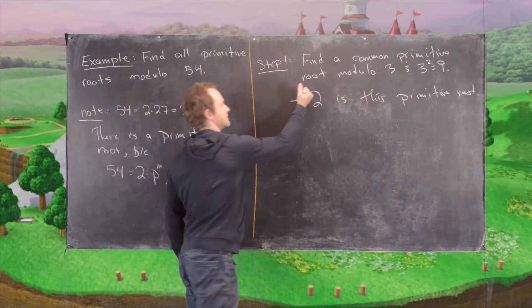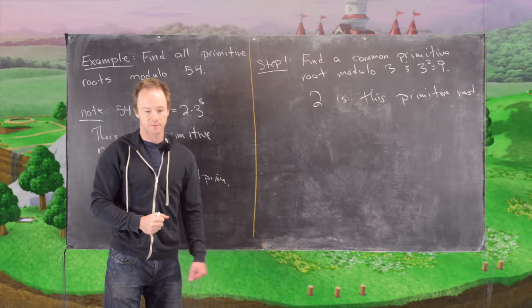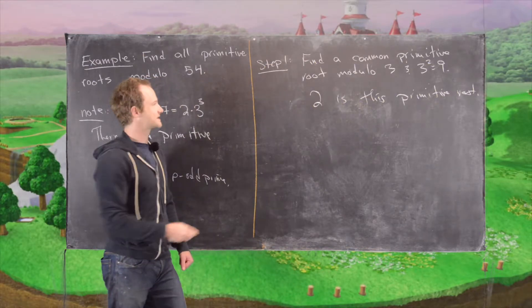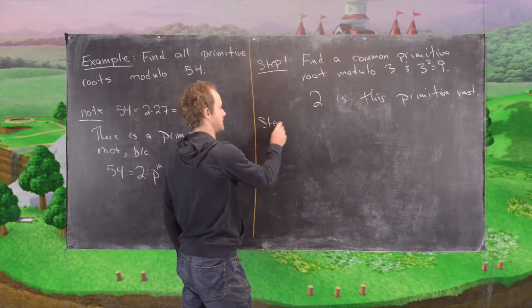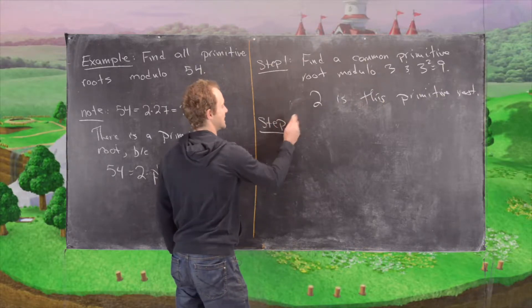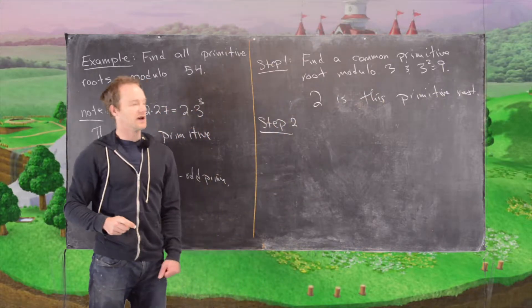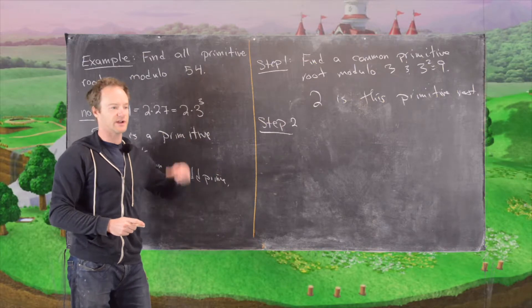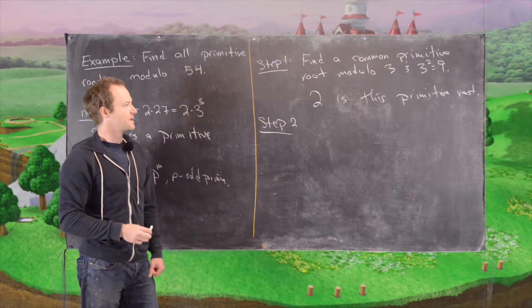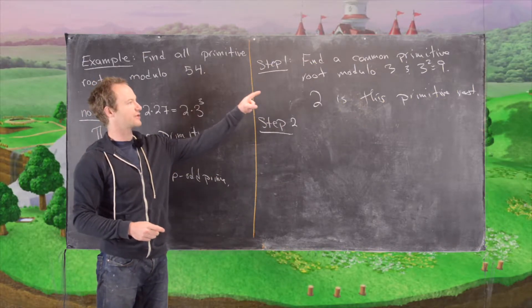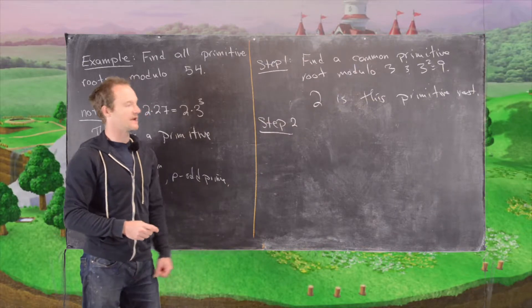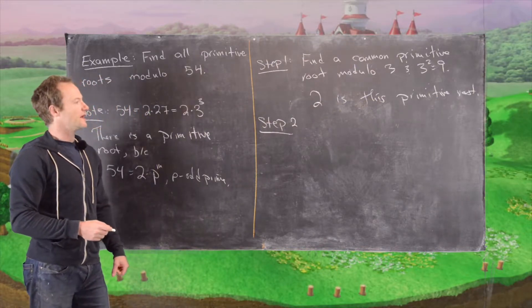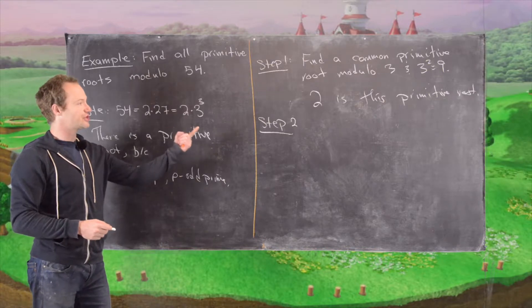So that looks like minus 2, but what I really mean is 2 is that primitive root. And so the next step is to ensure that this primitive root is written in an odd form. And so since we're working modulo 3 or modulo 9, we can not just choose 2,